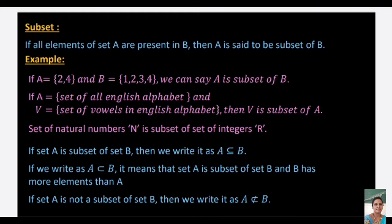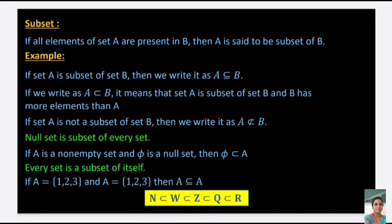The set of natural numbers N is a subset of the set of integers Z. If set A is a subset of set B, we write A ⊆ B, which means B has more elements than A. If A is not a subset of B, we write A ⊄ B.